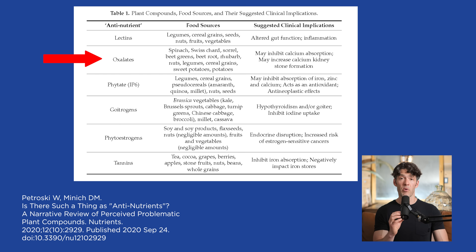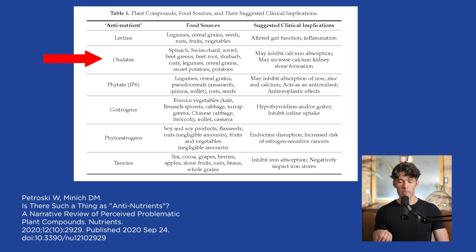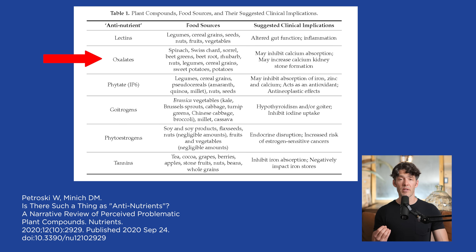Oxalates are a very big problem for people with joint pain. If you notice you have arthritis, osteoarthritis, or wake up with sore joints, I've found clinically over the decades that oxalates can be a major problem. These are found in spinach, Swiss chard, sorrel, beet, beetroot, potatoes, and also grains. This may inhibit calcium absorption and may increase calcium and kidney stone formation.